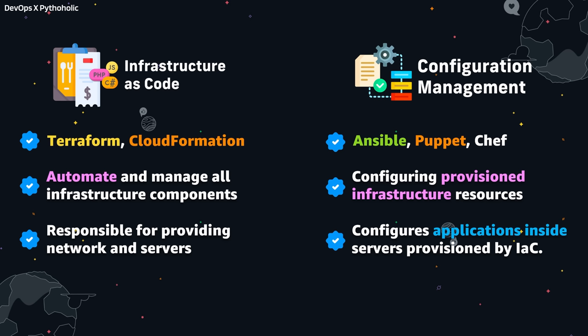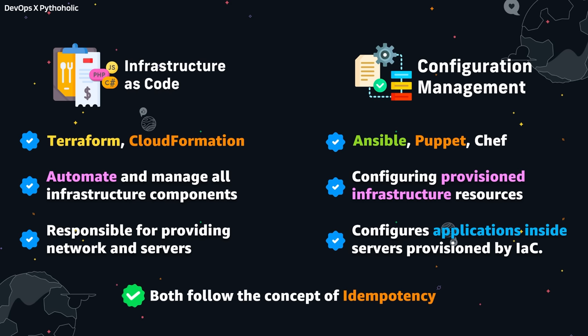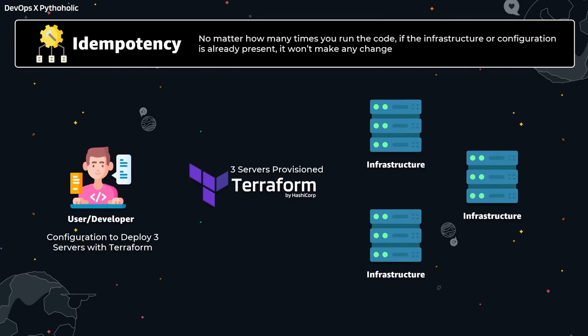The most important thing is that both follow the principle of idempotency. In simple words, idempotency is a property of some operation such that no matter how many times you execute it, you achieve the same result. Let's suppose you write a REST API GET operation to retrieve a data set from the application — would the result change if you keep executing the same GET operation? No, of course not. It won't, because it is idempotent — your execution doesn't affect the result.